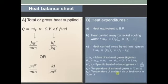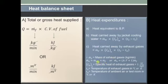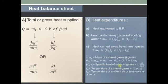Delta T is the difference in temperature, or the rise in temperature of the cooling water. Next is heat carried away by exhaust gases, that is Me multiplied by CpE multiplied by delta T. Me is the mass of exhaust gases in kg per minute. Me can be calculated in two forms: if mass of air is given, it is mass of air plus mass flow rate of fuel; and if air-fuel ratio is given, it is (air-fuel ratio plus 1) multiplied by mass flow rate of fuel. CpE is the specific heat of exhaust gases, equal to 1 kJ per kg Kelvin. T is the temperature of exhaust gases and TA is the temperature of ambient air or test room, both in degree Celsius or Kelvin.